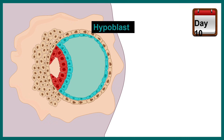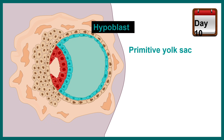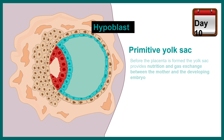The hypoblast, the layer from the bilaminar embryonic disc, eventually gives rise to the primitive yolk sac. It's important to note that before the placenta is formed and the maternal-fetal blood connection is established, the yolk sac is the key entity providing nutrition and helping in gas exchange for the embryo.